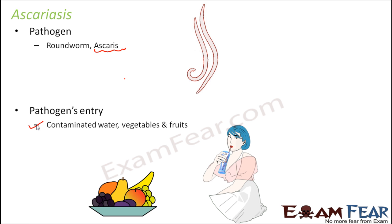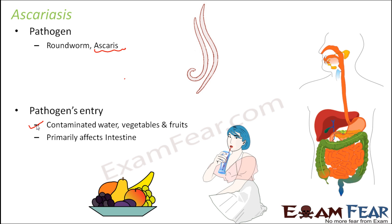Once the eggs of these worms are ingested, the eggs hatch in the small intestine, primarily affecting the intestinal part. The larvae then migrate through the bloodstream to the lungs, which can also cause symptoms of asthma. Gradually the larvae mature to form adults in the small intestine — so from eggs to larvae to mature worm, everything happens inside the intestine.